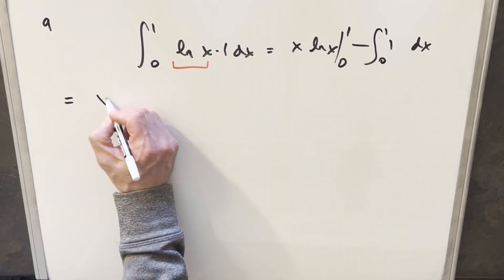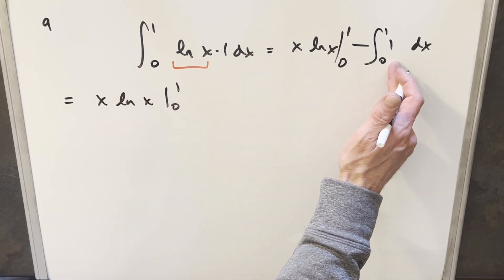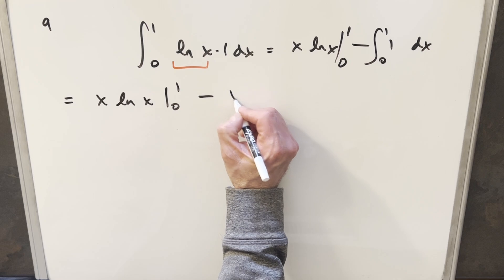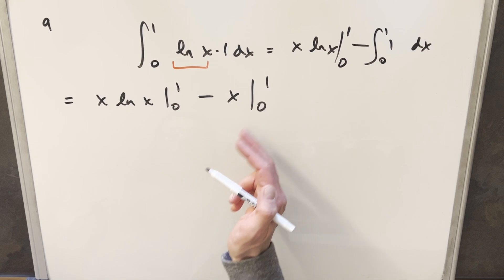Now coming down here, we're just going to copy this part over. We'll have our x ln x from zero to one. Here, integrating this, this is just going to be minus x evaluated from zero to one. When we evaluate this at zero, it's just going to be zero. So this part is just going to be minus one.